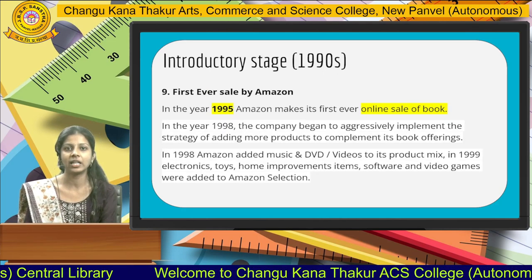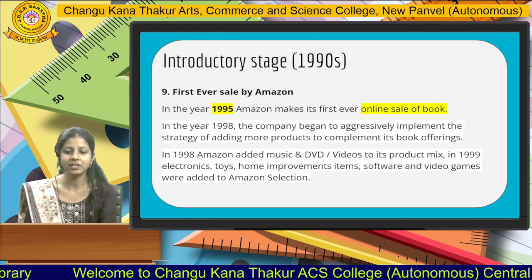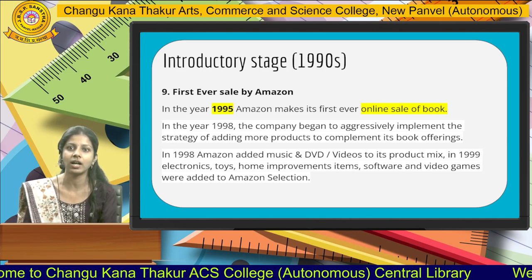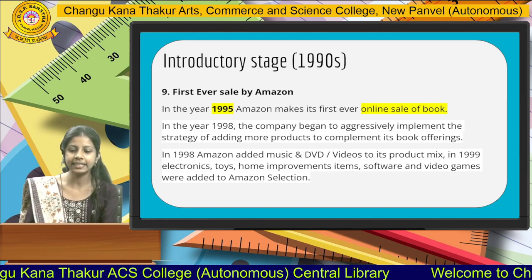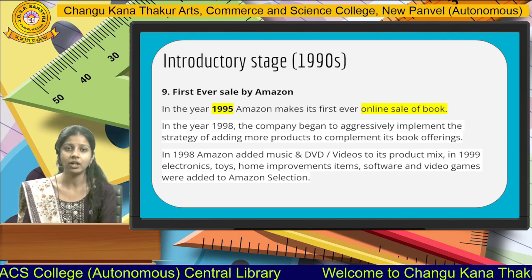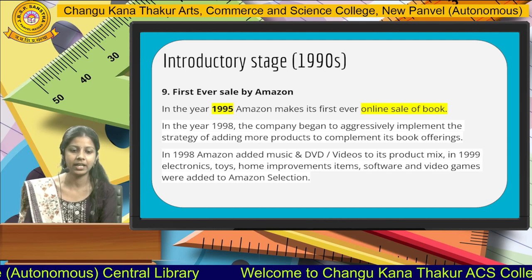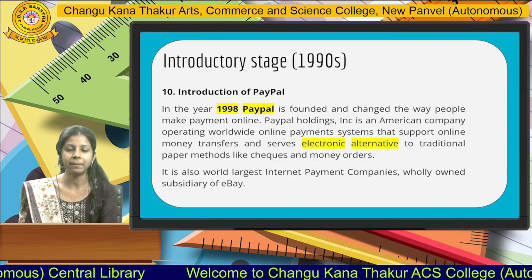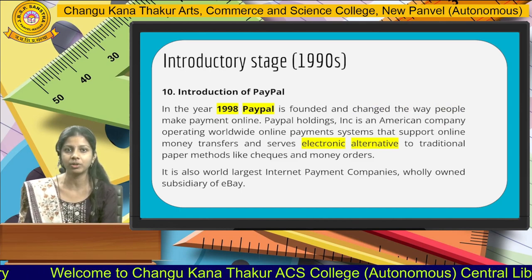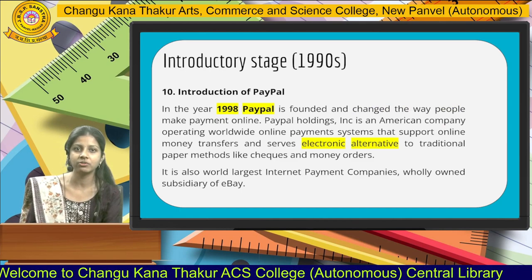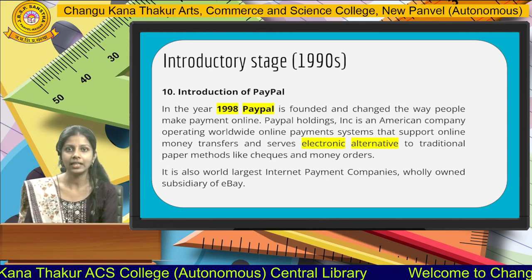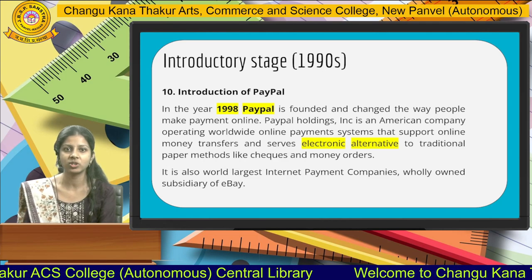Then, the first ever sale of Amazon. In the year 1995, Amazon started selling their products, and the first ever sale was the selling of an online book. Then in the year 1998, further online bookings and online services were provided by Amazon. PayPal was an online banking system to transfer funds from one account to another. PayPal was introduced in 1998, and the online payment system was activated.